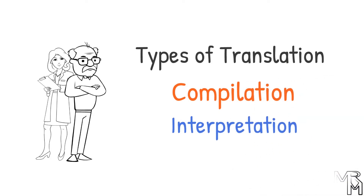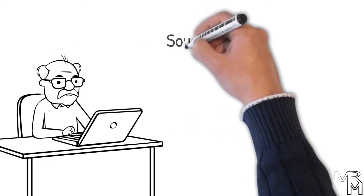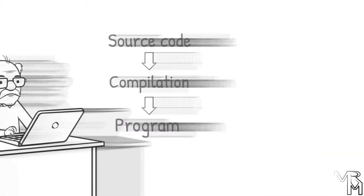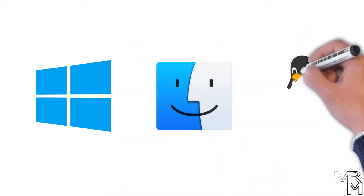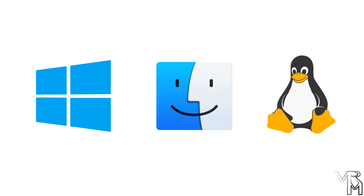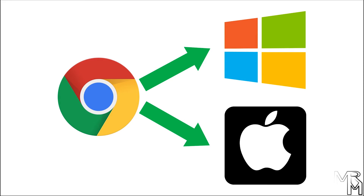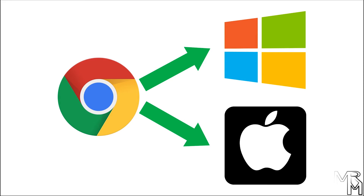Before we move on, let's take a look at some features of compiled and interpreted computer programs. When you compile source code, you create a program for a specific platform, or simply put, for a specific system such as Windows, Mac, Linux, and so on. This is why most user programs exist in different versions for different operating systems. For example, there are separate versions of Google Chrome for Windows and Mac. Another example is games — you cannot run games created for Windows on a Mac computer, and you cannot run Xbox or PlayStation games on a Windows computer.